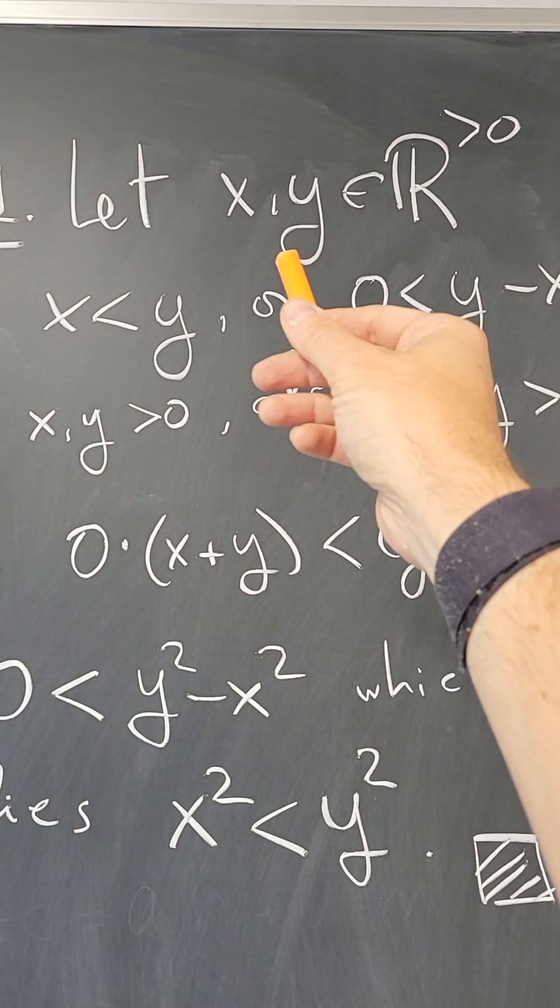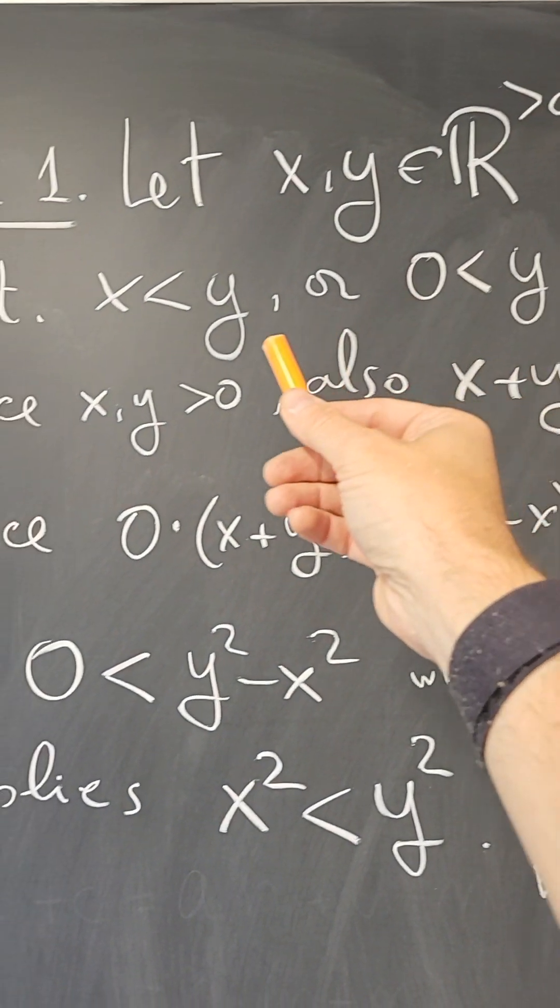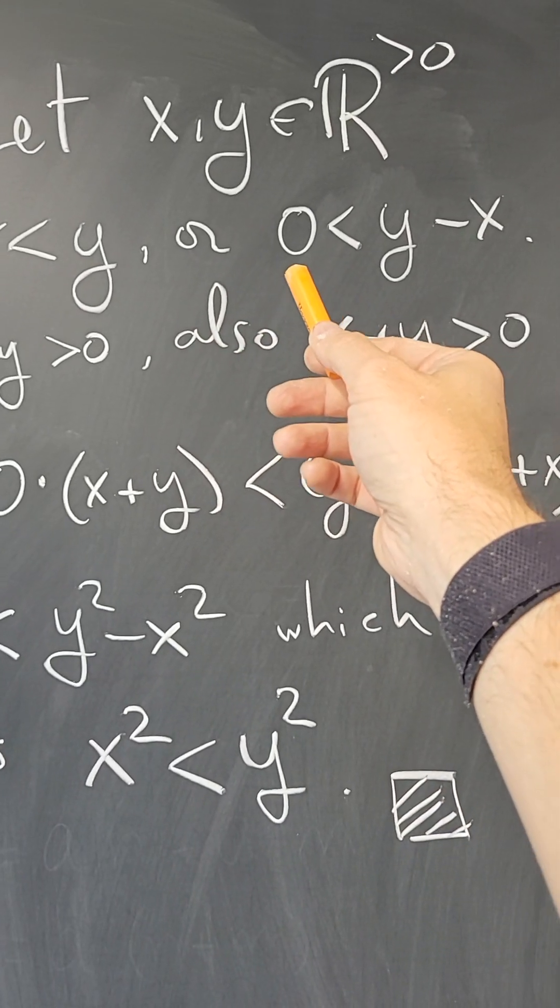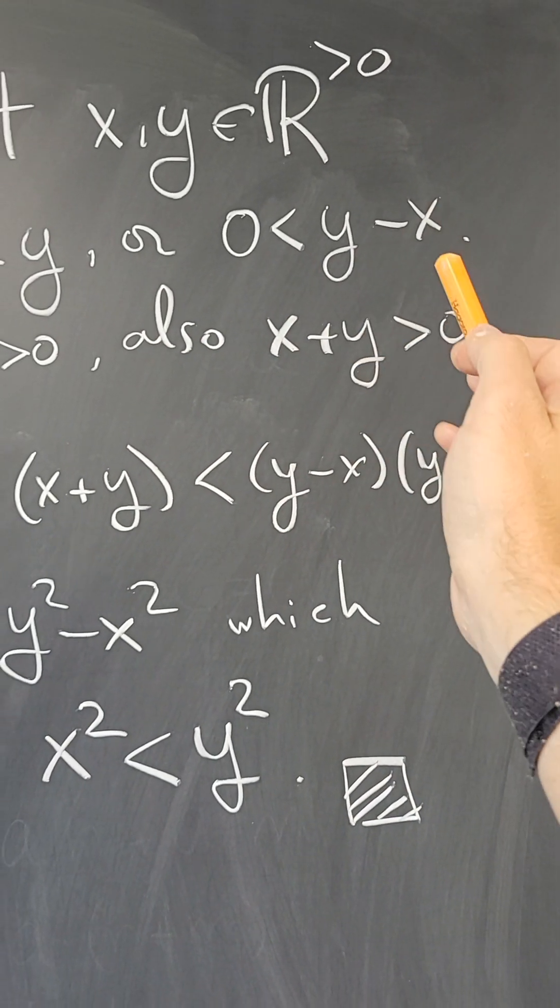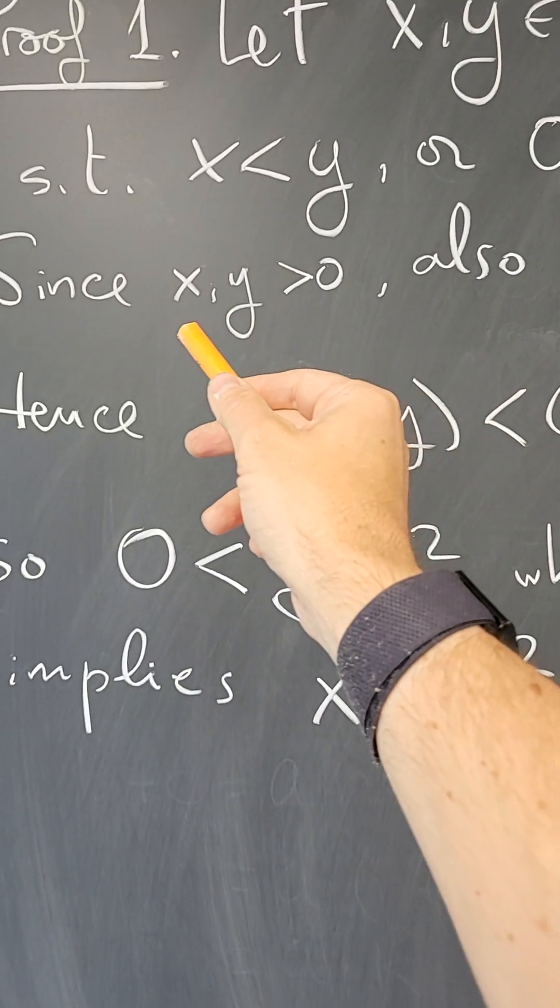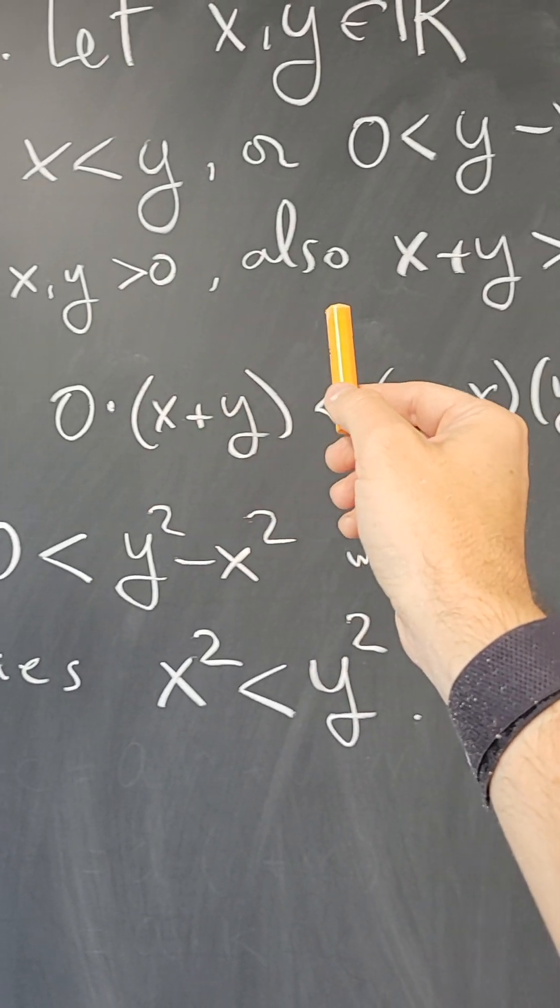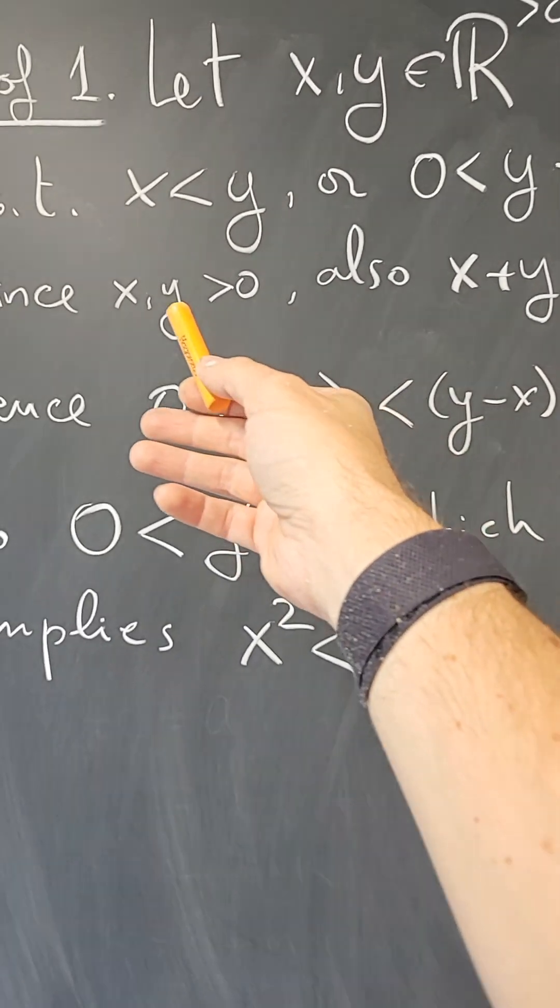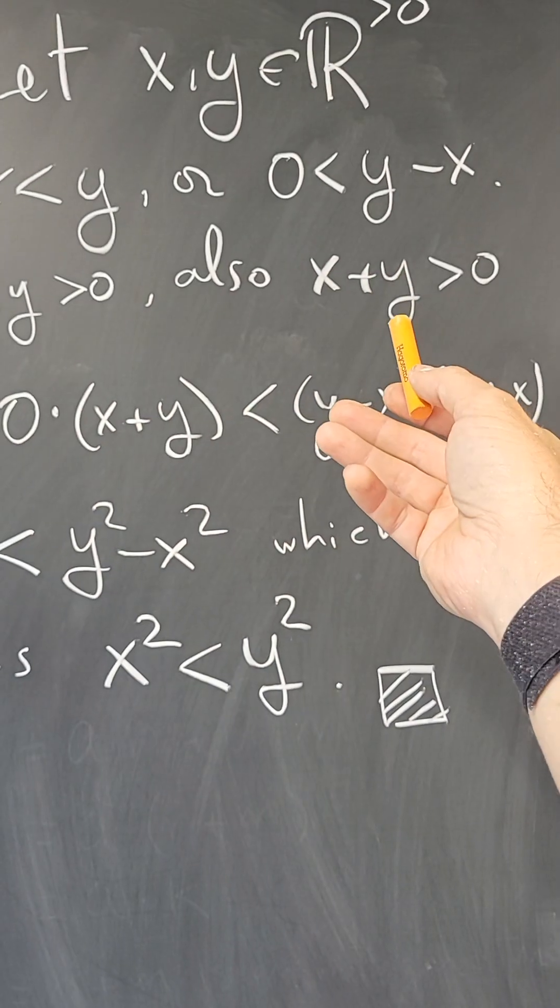Let's start first with x and y being positive real numbers such that x is less than y, which is equivalent to zero is less than y minus x. Now notice that x and y are positive and therefore x plus y is also positive because the sum of two positive real numbers is a positive real number.